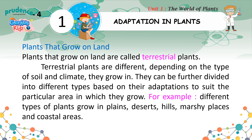Plants that grow on land are called terrestrial plants. Terrestrial plants are different depending on the type of soil and climate they grow in. They can be further divided into different types based on their adaptations to suit the particular area in which they grow — for example, different types of plants grow in plains, deserts, hills, marshy places, and coastal areas.